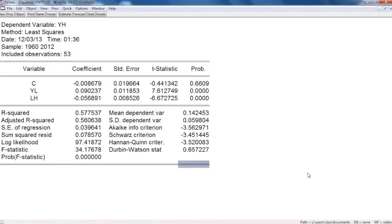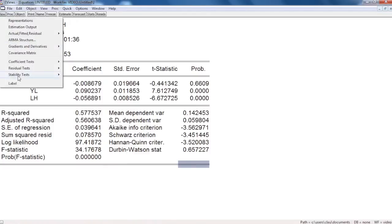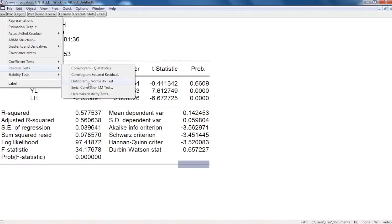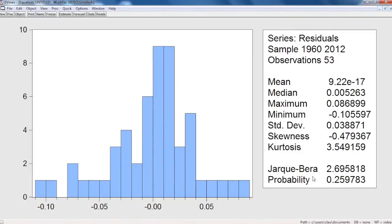Now, we have to run the normality test in which the null hypothesis is that there is normality. As you can see, the probability is of 26%, which allows us to accept the null hypothesis.